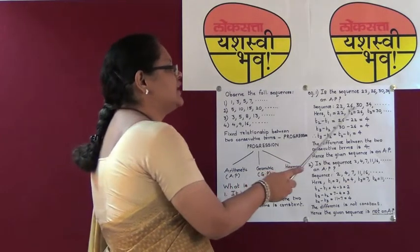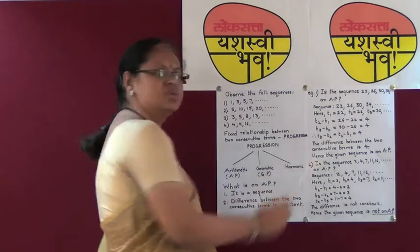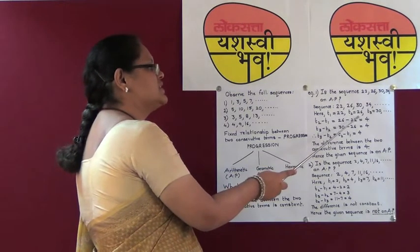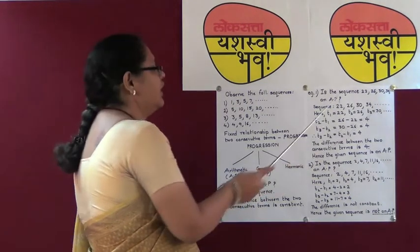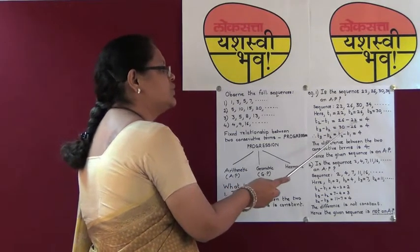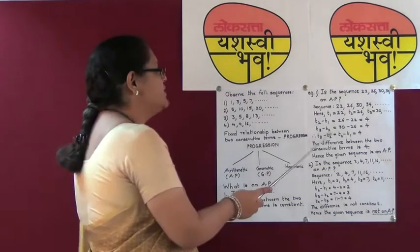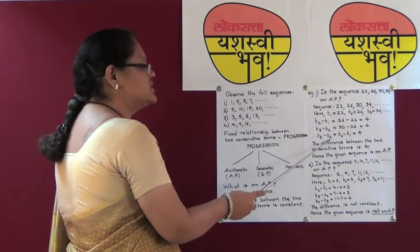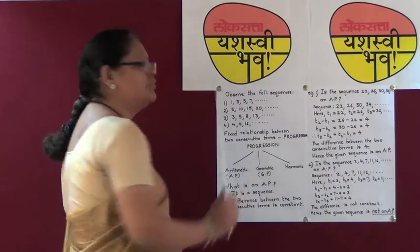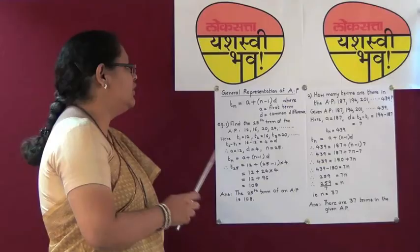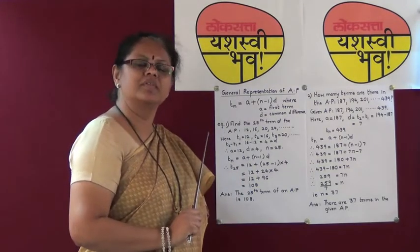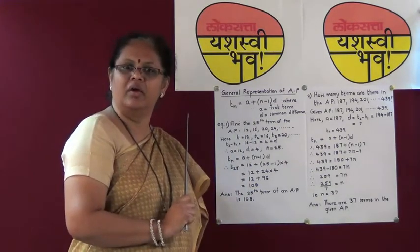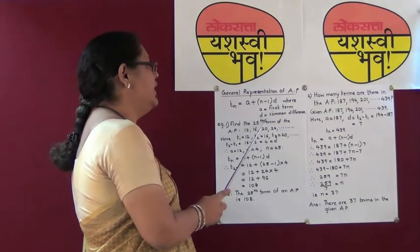Writing the sequence 22, 26, 30, 34 and so on: the first term is 22, the second term is 26, the third term is 30. T2 minus T1 is 26 minus 22, that is 4. T3 minus T2 is 30 minus 26, that is also 4. So T3 minus T2 equals T2 minus T1, confirming it is an arithmetic progression.